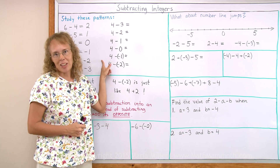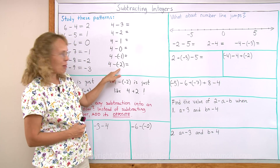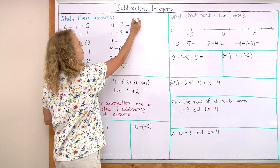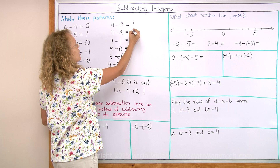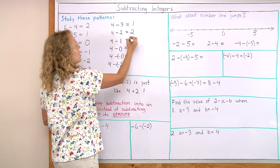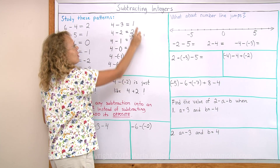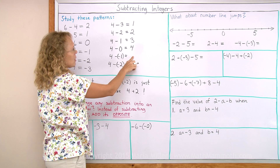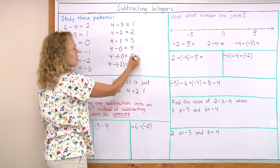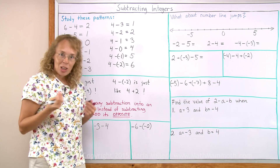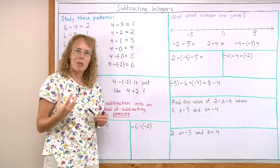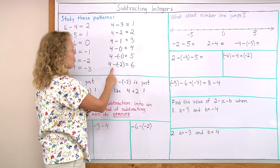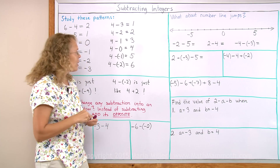Now this one is a little bit more interesting because of what we come to in the end. 4 minus 3 is 1, 4 minus 2 is 2, 4 minus 1 is 3, and then here's 4. It is increasing by 1 in each step. So this one must be 5, and this one must be 6, logically speaking, so that the pattern will work. Interesting — 4 minus negative 2 equals 6. It got bigger.